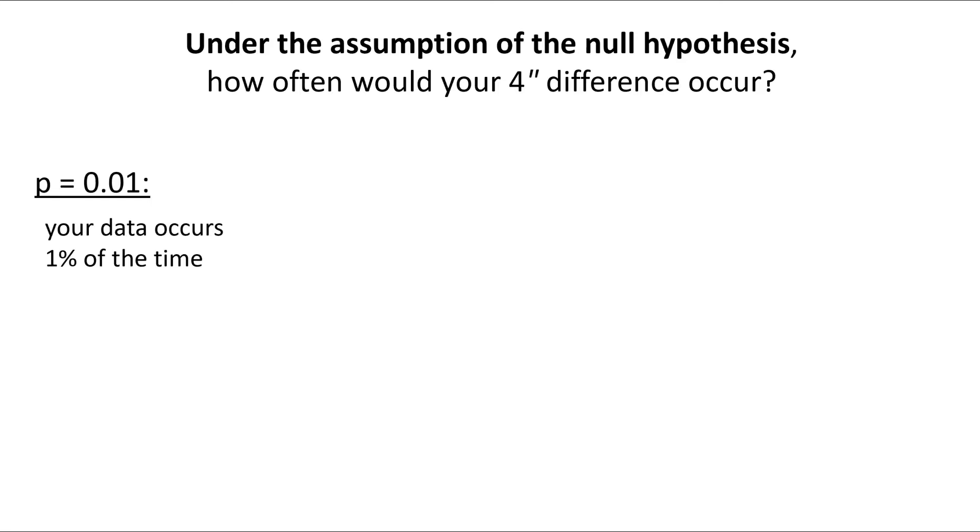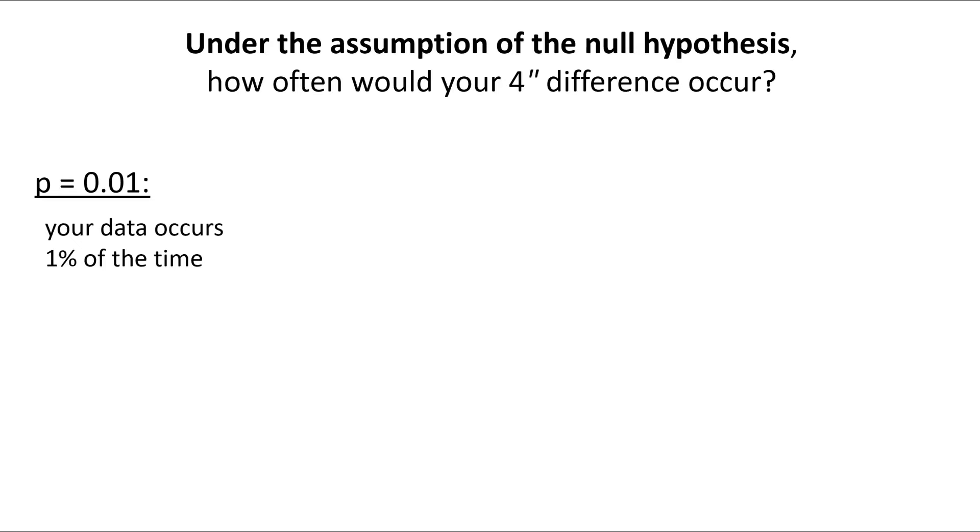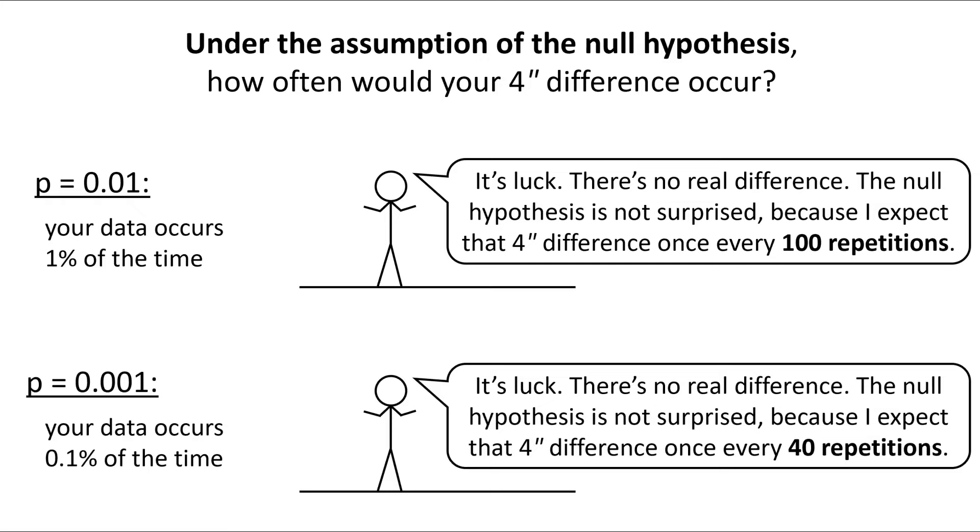If the p-value is 0.01, then your 4 inch difference would only occur 1% of the time under the null hypothesis. That means it would only occur once every 100 repetitions. Can we say there's no real difference? And at some point, it's so extreme and the odds are so terrible that we have to reject the null hypothesis for being too outrageous.